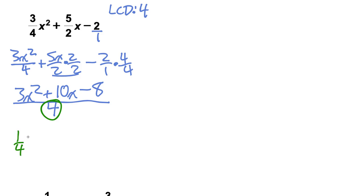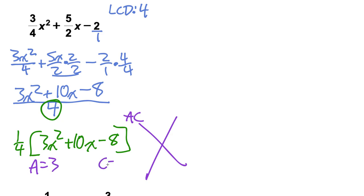It's one-fourth times 3x squared plus 10x minus 8, and then we can do that AC game here. A is 3, c is negative 8, and b is 10.